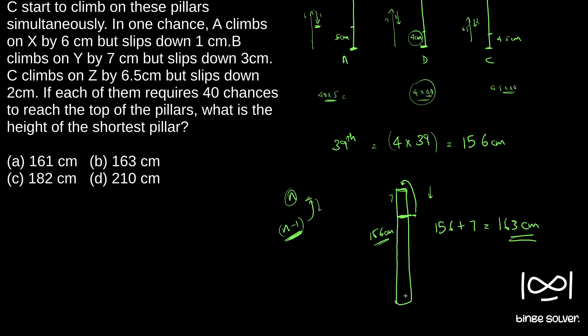So the same concept we used - 156 centimeter is the distance the spider has traveled in 39 jumps. And then in the last jump, it covers 7 centimeter and reaches the top. It is not slipping down. So 156 plus 7, 163 is the answer.